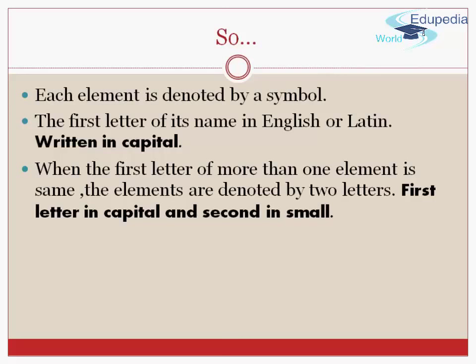So now we conclude the symbols as each element is denoted by symbol. The first letter of its name in English or in Latin is in capital letter. And when the first letter of more than one element is same, the elements are denoted by two letters. First letter in capital and second in small.